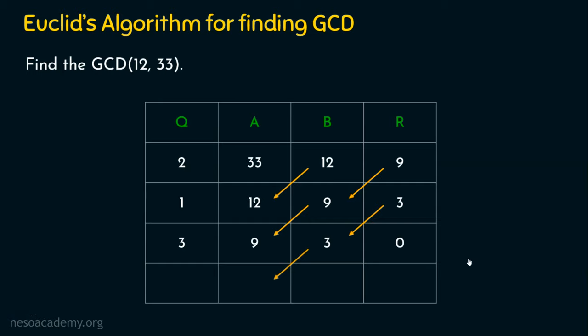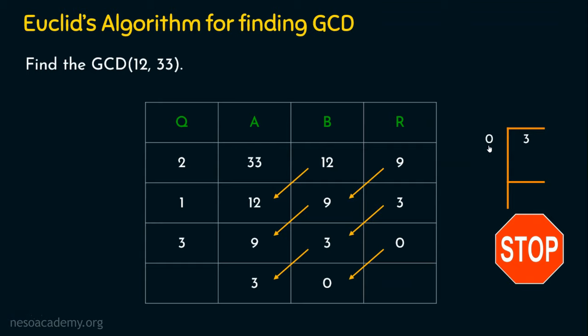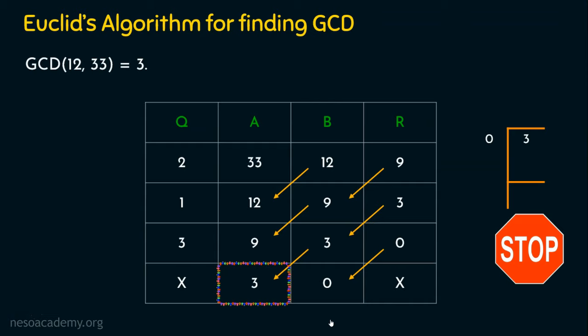So 3 goes to A and 0 goes to B. Now we perform 3 mod 0. Division by 0 cannot be performed mathematically. So we cannot get quotient or remainder. Now B is 0 — whenever B is 0, whatever is in A is the GCD. A is 3, so the GCD of 12 and 33 is 3. It means 3 is the biggest number that can divide both 12 and 33: 3 divides 12 four times and divides 33 eleven times.